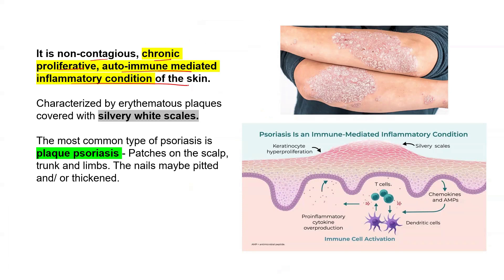inflammatory condition of the skin which is characterized by erythematous plaques covered by silvery white scales. As you can see here, there are these well-demarcated plaques present on the skin. They appear to have a silvery white appearance with an underlying erythematous or red base.